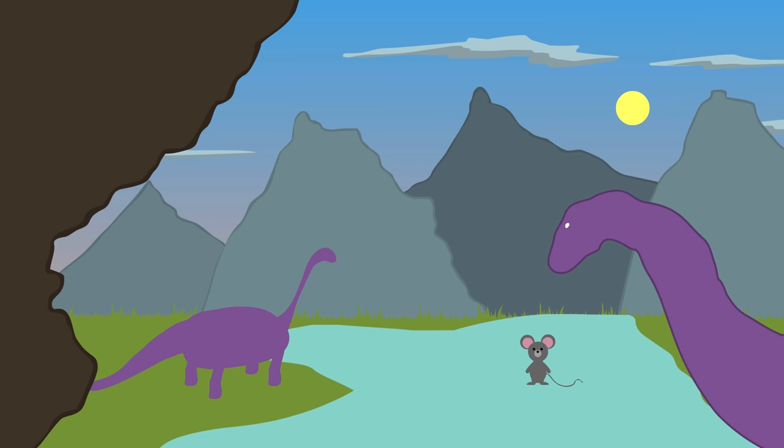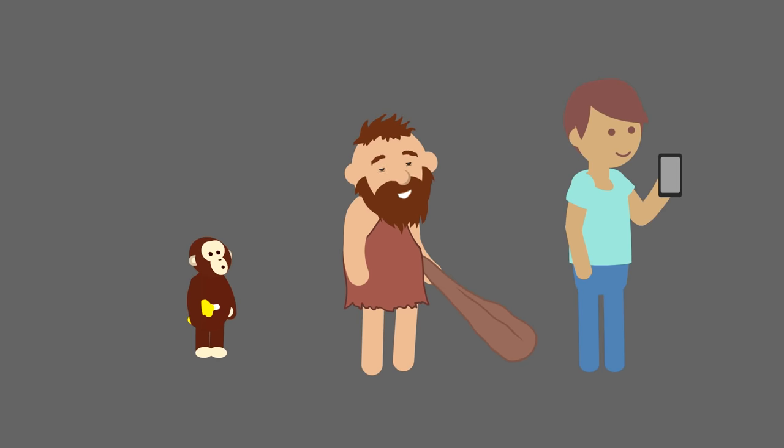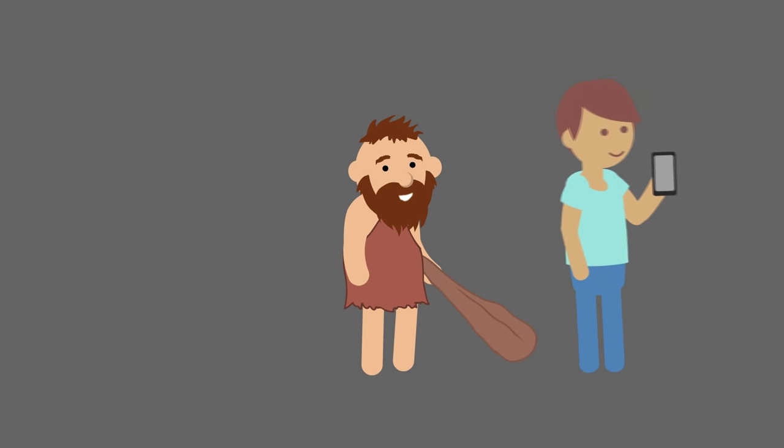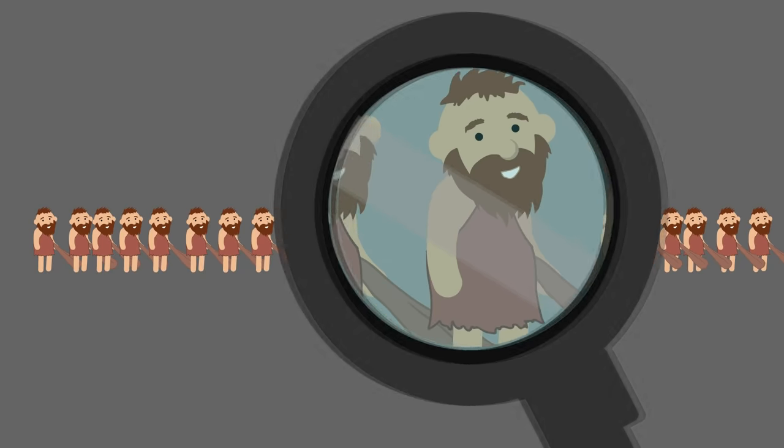The fossil record has enabled scientists to track the path of human evolution from great apes and has even allowed us to identify where humans and chimpanzees went their separate ways. Our last common ancestor lived about 5 to 7 million years ago. Since that time, over 20 hominid species have been discovered.